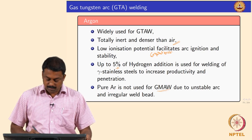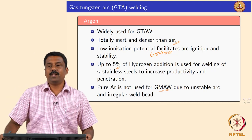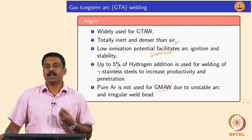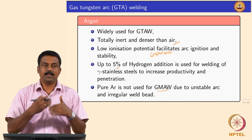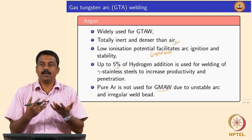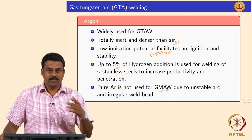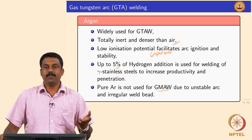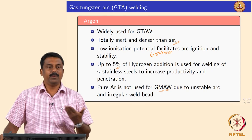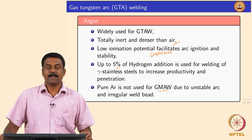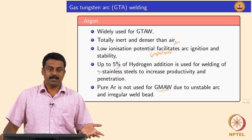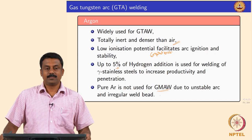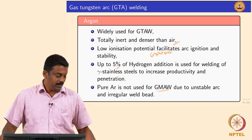Generally we do not use argon for GMAW, though nowadays with better control over wire feed rate it is possible. In those days when the wire feed rate was not synchronized with the power source waveform characteristics, argon was not used for GMAW. Now we can control it, but mostly we still do not prefer to use pure argon for GMAW.